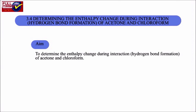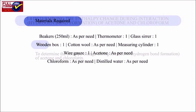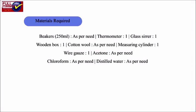Experiment 3.4: To determine the enthalpy change during interaction (hydrogen bond formation) of acetone and chloroform. Aim: To determine the enthalpy change during interaction of acetone and chloroform. Materials Required: 250 ml beaker, thermometer calibrated to 0.10 degrees Celsius, boiling tube, glass stirrer, wooden box, cotton wool, measuring cylinder, wire gauze, acetone, chloroform, and distilled water.